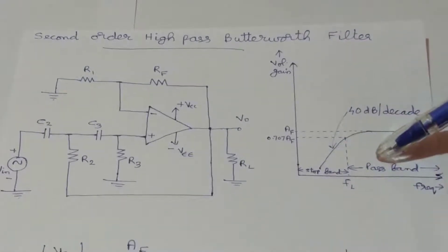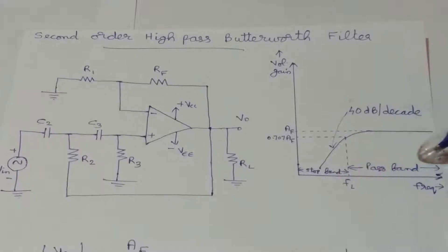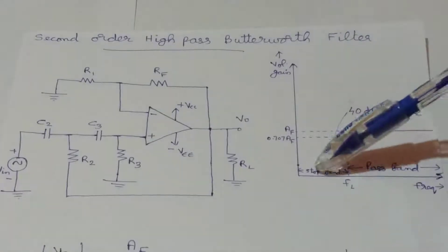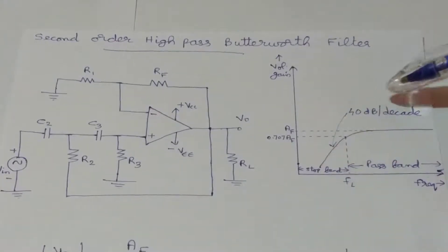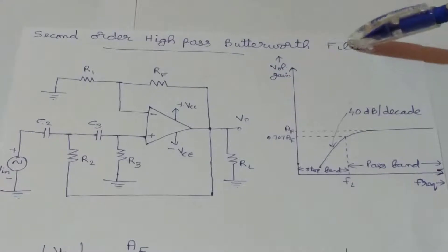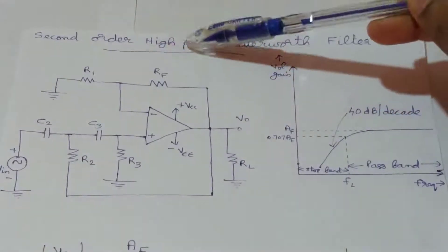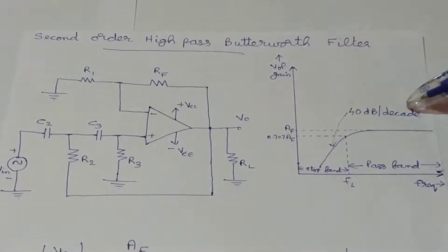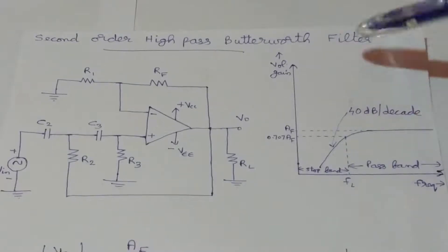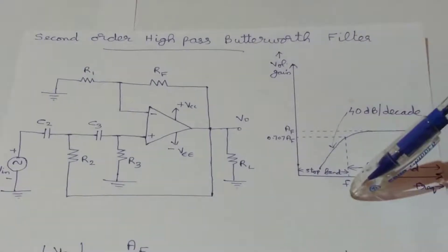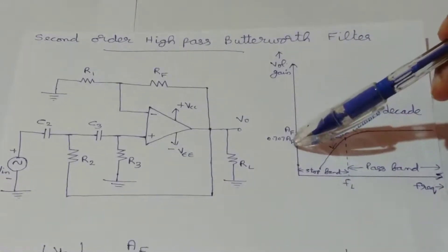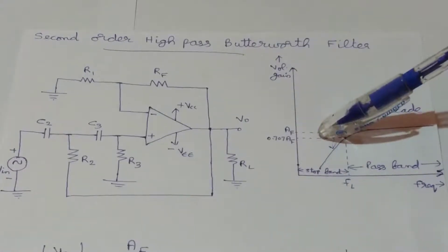The pass band is the range of frequencies above FL, and the stop band is below FL. The roll-off rate is 40 dB per decade because this is a second-order high-pass Butterworth filter. AF represents the pass band gain. At the cutoff frequency FL, the gain is AF divided by root 2, or 3 dB below the maximum gain.